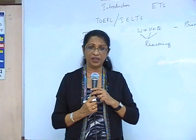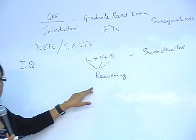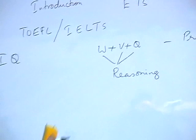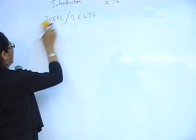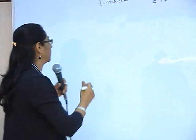So the GRE, which is a test of reasoning, tests you on two components: the writing and the verbal, on what is called verbal logic, and on the quantitative, on what is called non-verbal logic. Before we go a little more into the GRE as a test, let us look at the format of the test and the components of the GRE. When you go to write the GRE test, the first section that you are going to face is the analytical writing section.